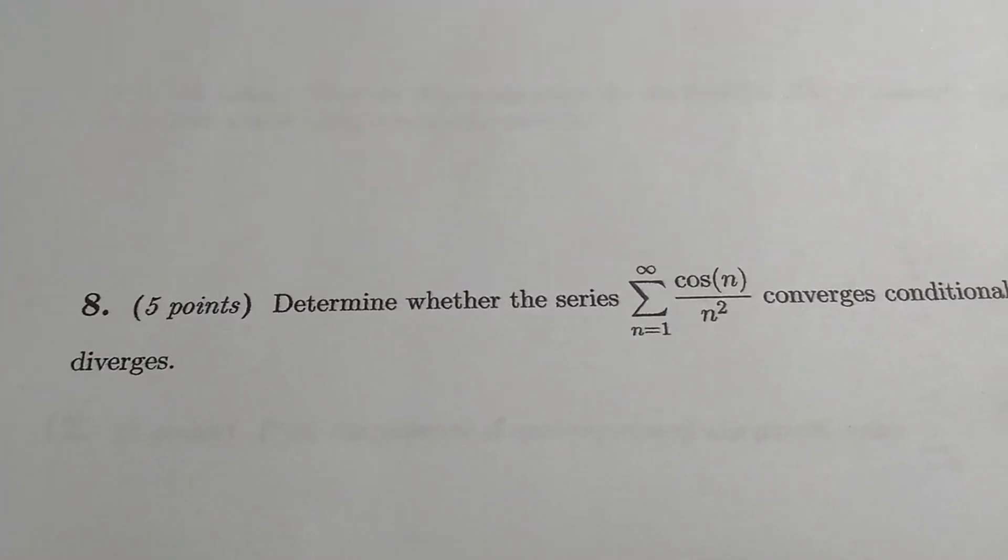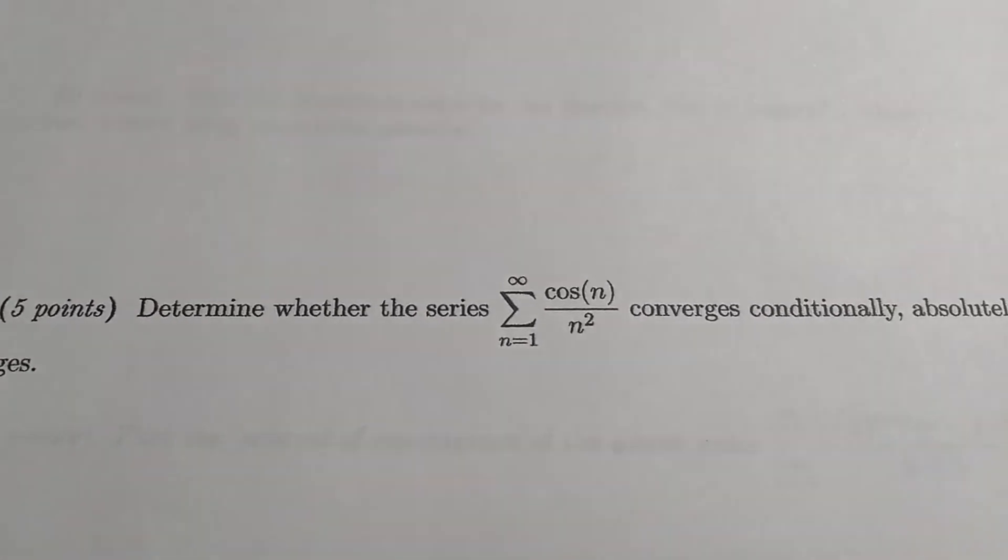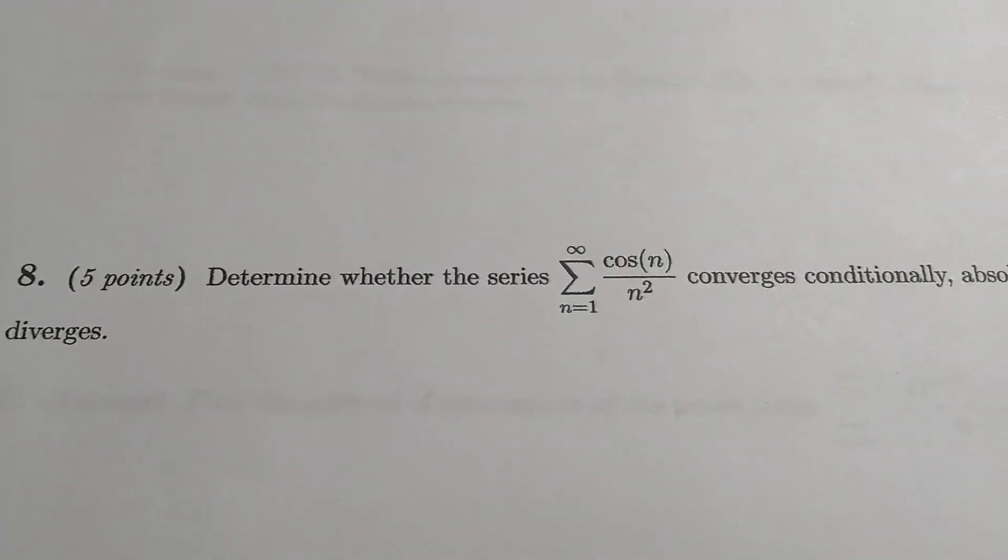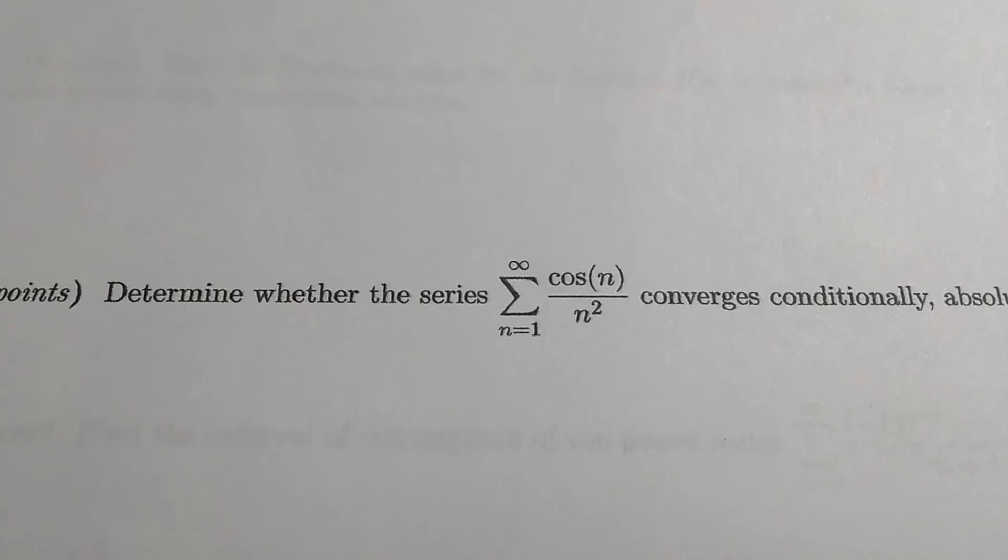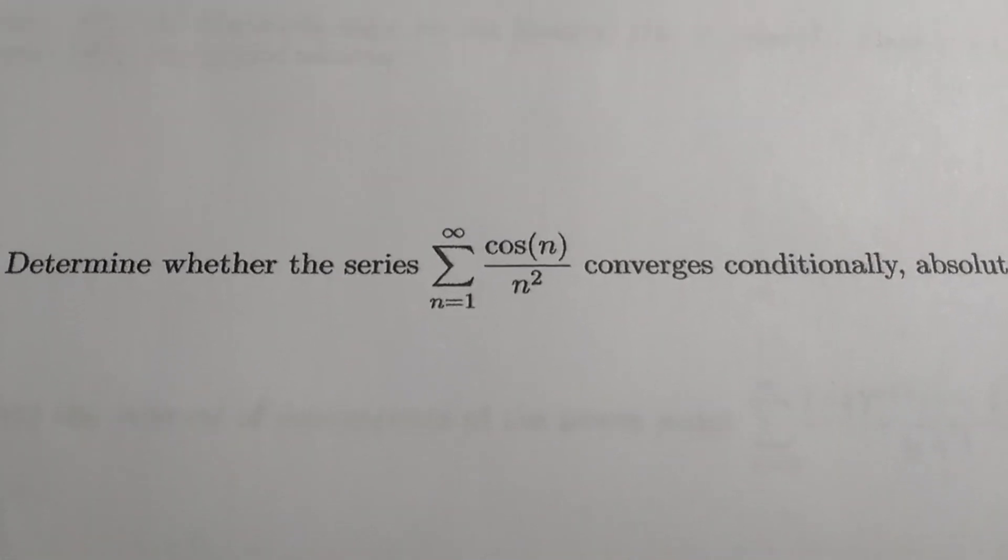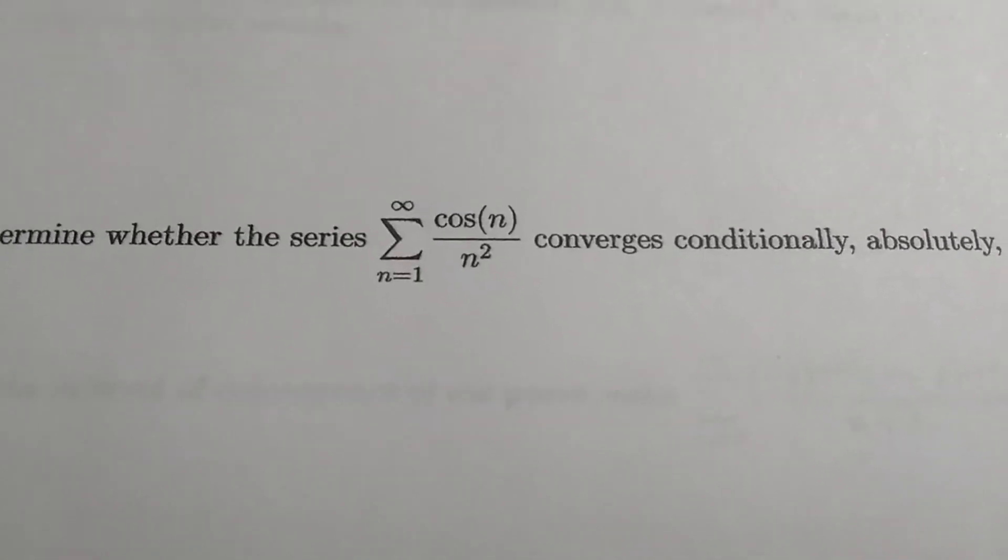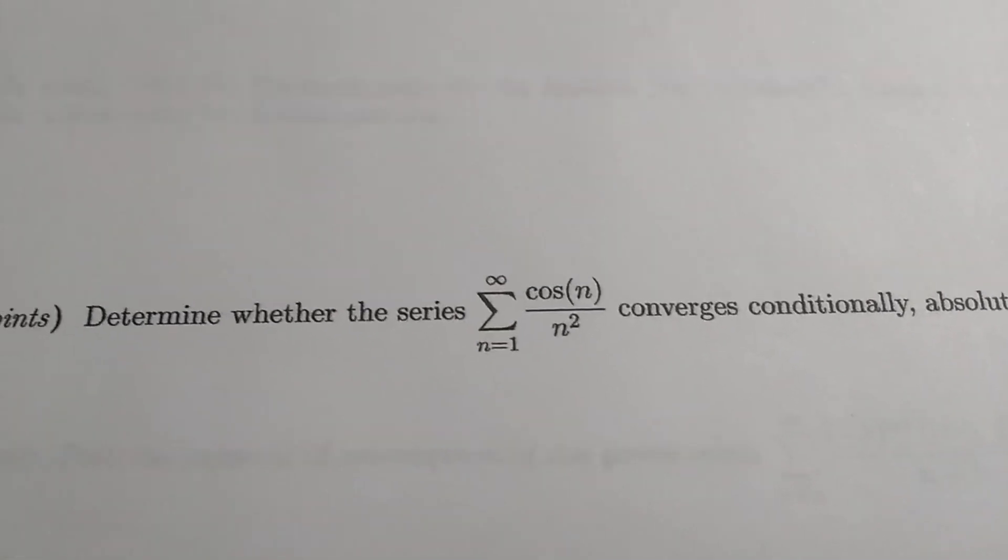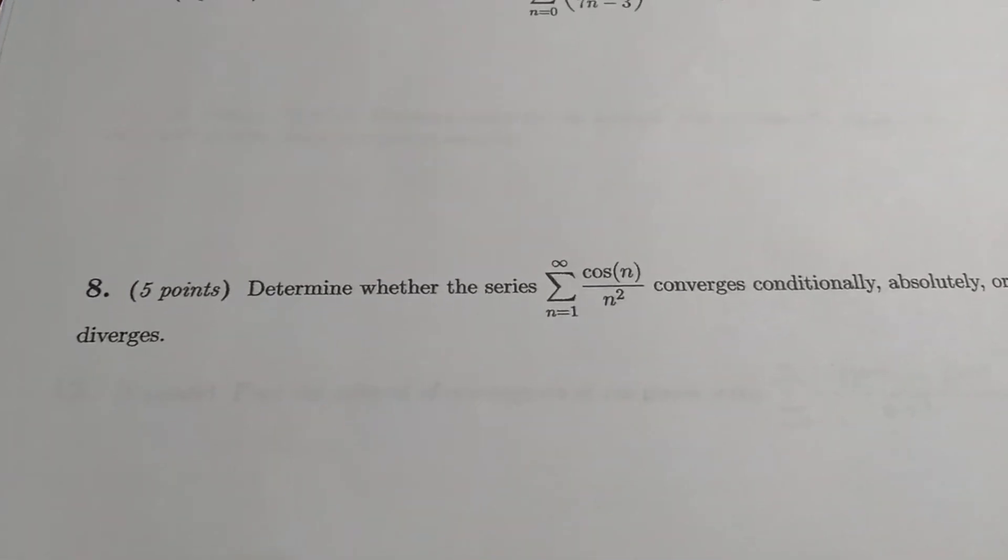Number eight is pretty tricky. It wants to know if the function converges conditionally, absolutely, or diverges. So a common mistake in this question is people will try to use direct comparison right away. But you actually have to start by taking the absolute value of cosine of n over n squared and then show that converges. Therefore, the series converges absolutely. So not hard if you take the right approach. Let's go to the next page.